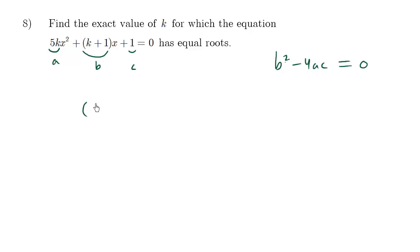This is simply a plug-and-chug type formula. B squared is going to be k plus one squared minus 4ac. A is 5k, c is positive one, and we want to set this equal to zero. We're going to expand this binomial: k squared plus 2k plus one. This is a minus sign here, 4 times 5 is 20, so we have minus 20k equals zero.